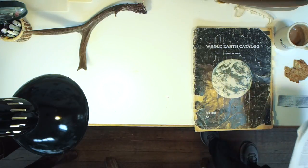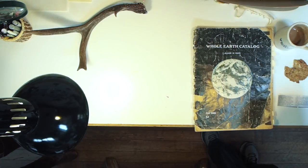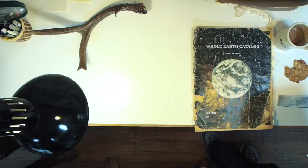Steve Jobs, in a commencement address at Stanford in 2005, said this about the Whole Earth Catalog. When I was young, there was an amazing publication called the Whole Earth Catalog, which was one of the Bibles of my generation. It was created by a fellow named Stuart Brand, not far from here in Menlo Park, and he brought it to life with his poetic touch. It was sort of like Google in paperback form, 36 years before Google came along.